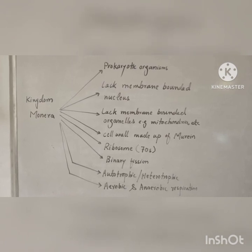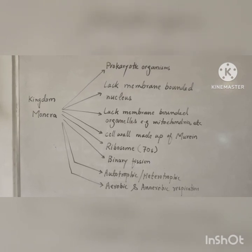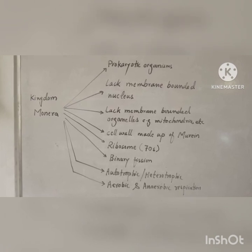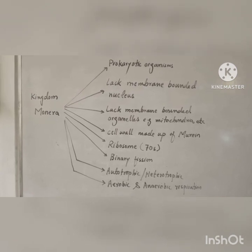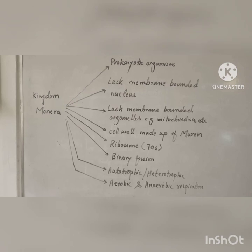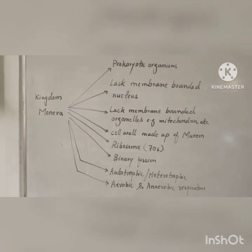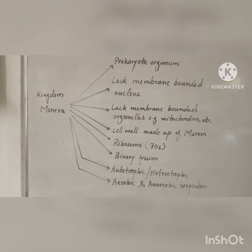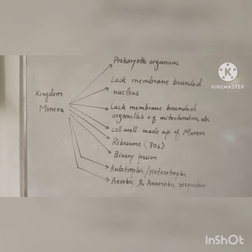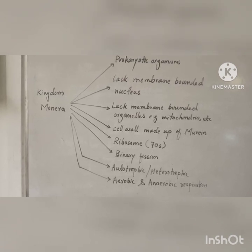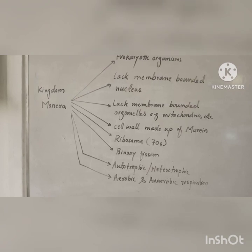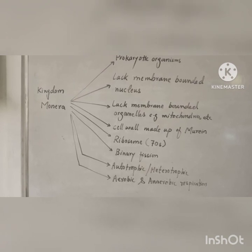Organisms in Kingdom Monera also lack membrane-bounded organelles, such as endoplasmic reticulum, mitochondria, plastids, lysosomes, and vacuoles. They are unicellular, simplest, or colonial organisms. Their cell wall is made up of murein, which consists of sugar and amino acids. They have small-sized ribosomes of about 70S. Subdivision occurs by binary fission — there is no mitosis or meiosis.